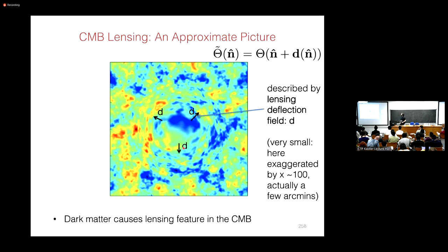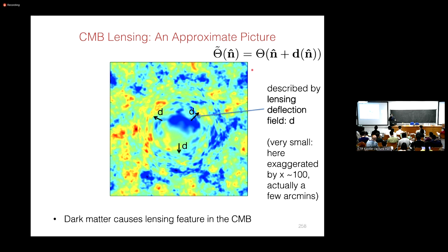Let's make this more quantitative by introducing the CMB lensing deflection field D, a two-dimensional vector field that describes this remapping. It takes you from the unlensed CMB sky theta to the lensed CMB sky theta-tilde. Intuitively, this is just a field that points from the direction in which the CMB photon is received to the direction in which it was originally emitted.